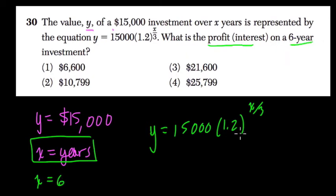So x is equal to 6. If we plug this in now, we get y equals $15,000 times 1.2 to the 6 over 3, which is 2, or second power.